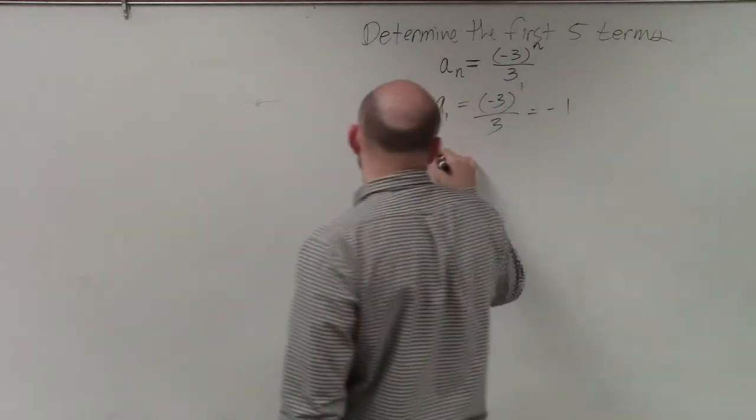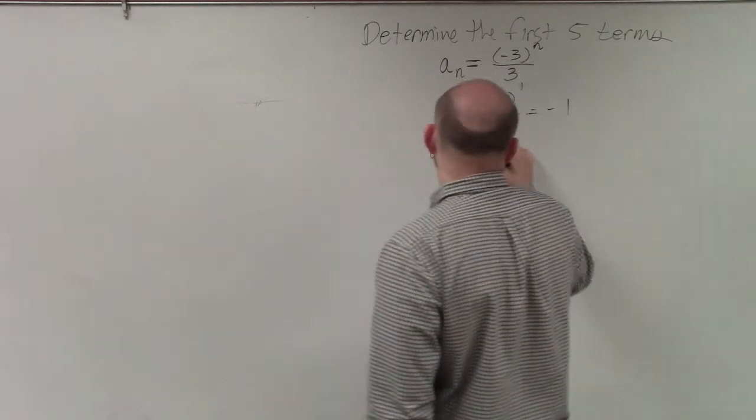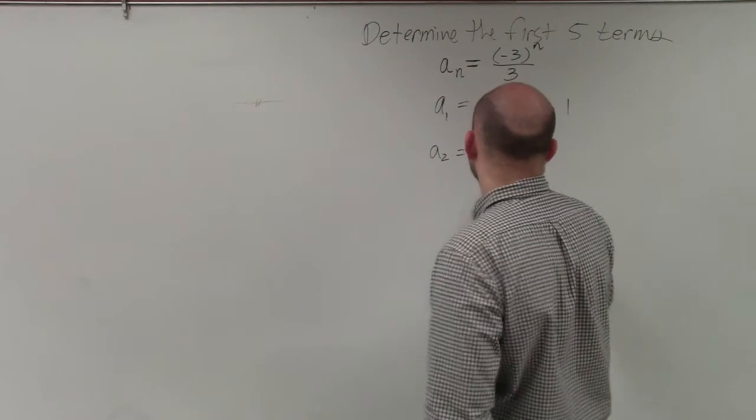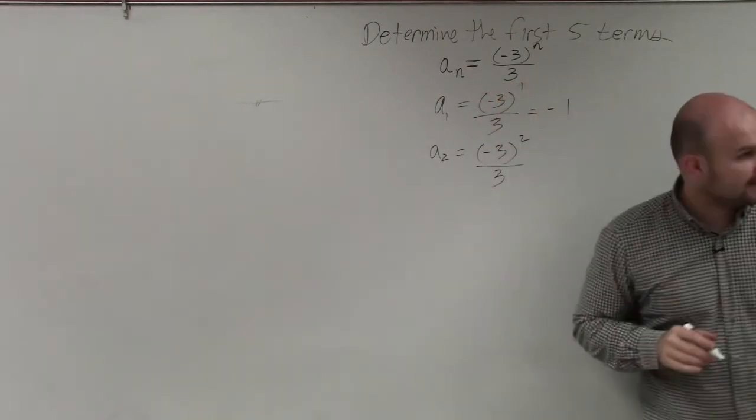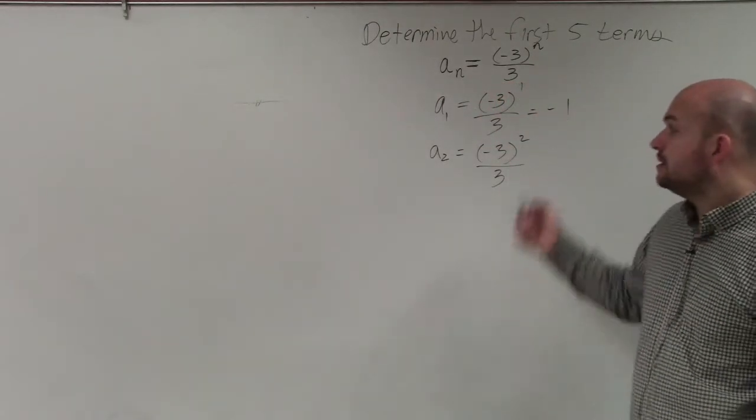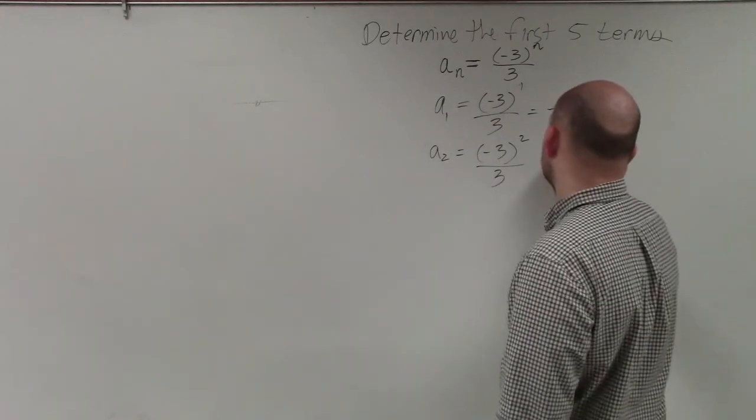Now, we do a to the second, which would be negative 3 squared over 3. Well, negative 3 squared is going to be a positive 9. Positive 9 divided by 3 is just 3.